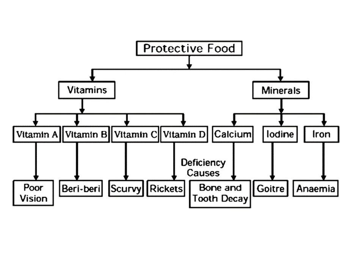Vitamins include vitamin A, B, C, D, E and K, and minerals include calcium, iodine, and iron along with other minerals. Deficiency diseases summary: poor vision is caused by deficiency of vitamin A, beriberi by vitamin B, scurvy by vitamin C, and rickets by vitamin D. Deficiency of calcium causes bone and tooth decay. Deficiency of iodine can cause goiter in which there is not proper functioning of the thyroid gland. Deficiency of iron causes anemia, which is basically lack of hemoglobin or blood in our body.